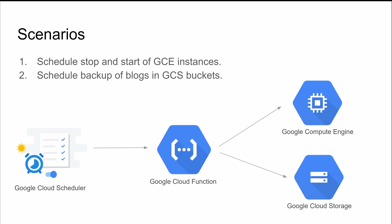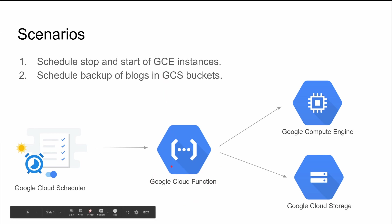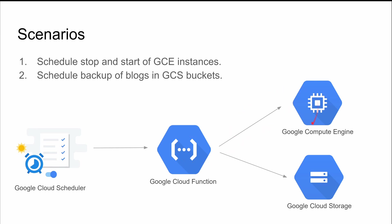So how would you achieve that? What we have to do in these scenarios is use another service called Google Cloud Functions — that's going to act as a glue for talking to multiple GCP services. For instance, in the first scenario, if I have to stop and start GCE instances, I would schedule the job for IST or EST based on the time zone.